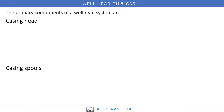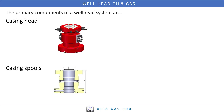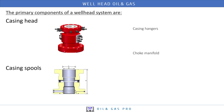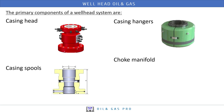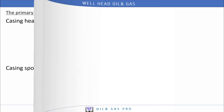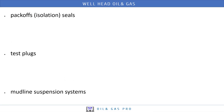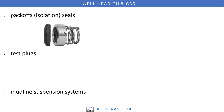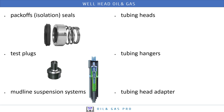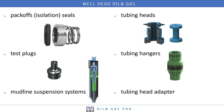The primary components of the wellhead system are: casing head, casing spool, casing hangers, choke manifold, back-off seals, test plugs, mudline suspension system, tubing heads, tubing hangers, and tubing head adapters.